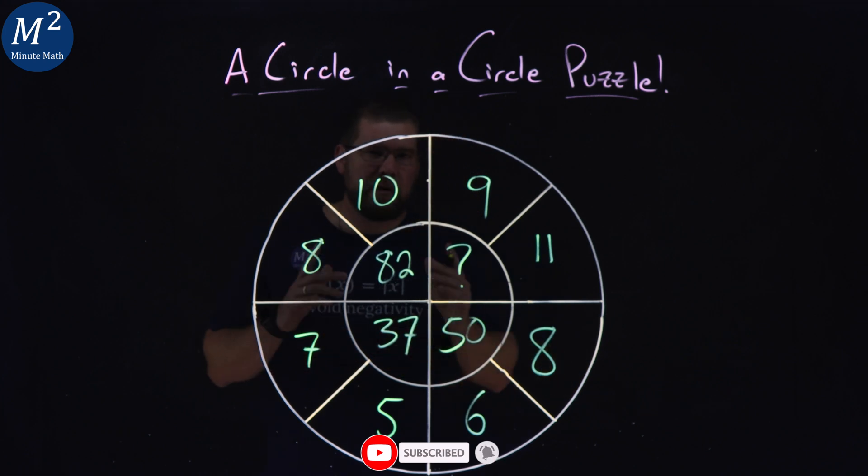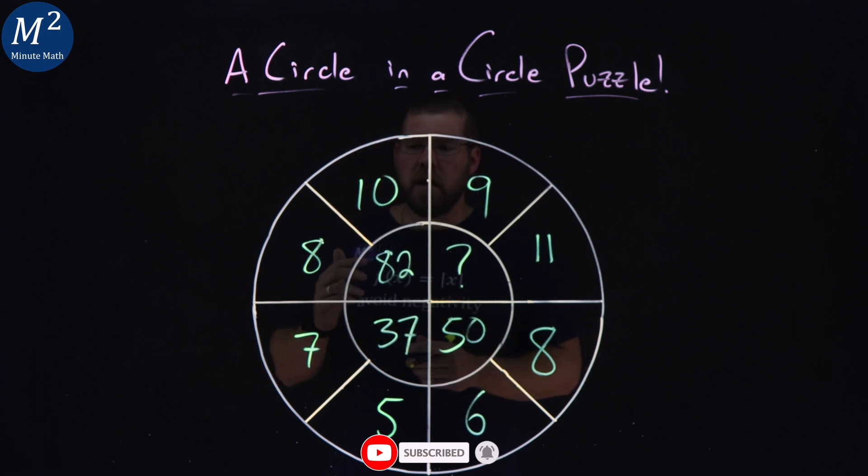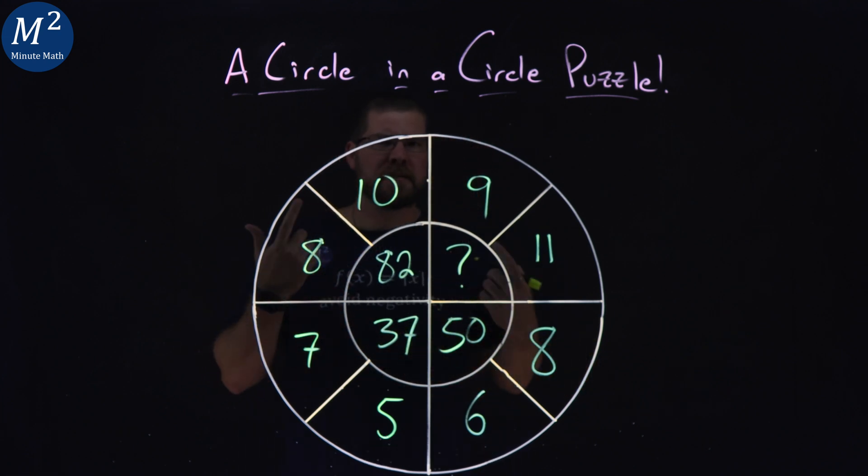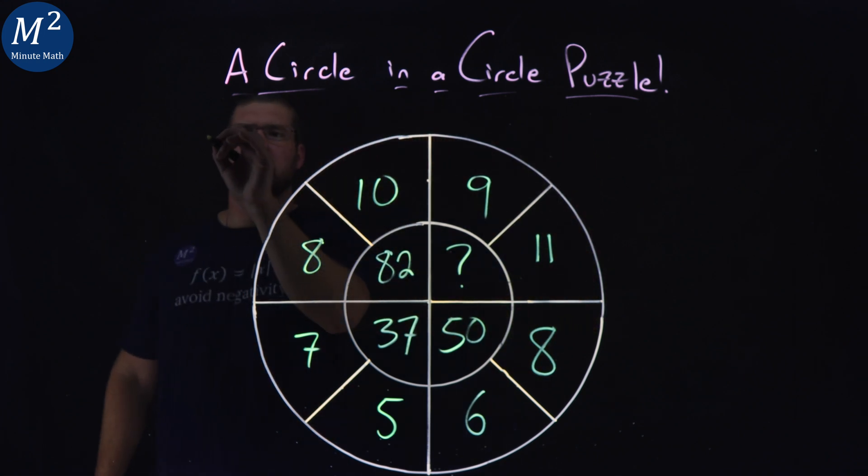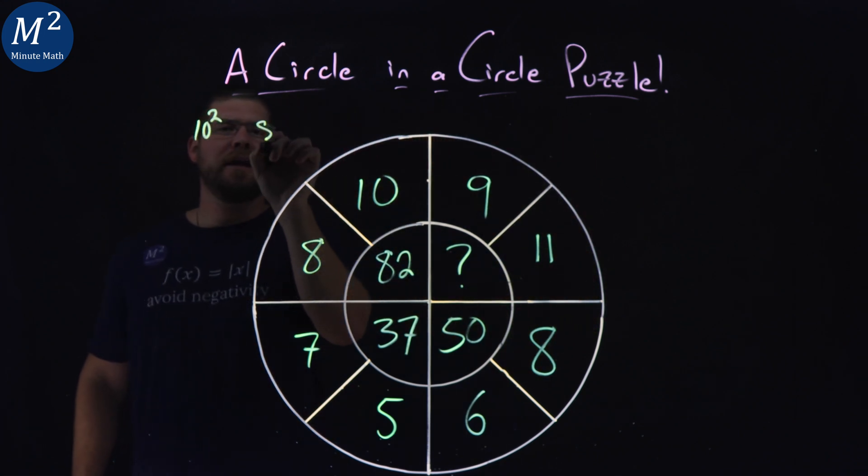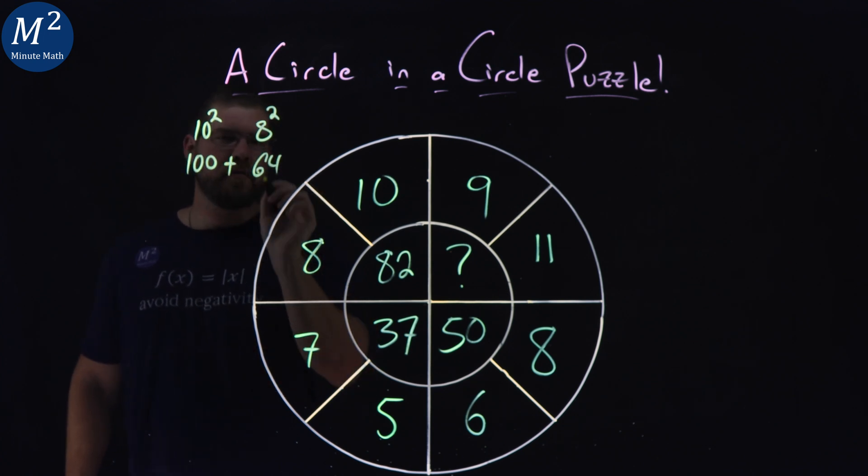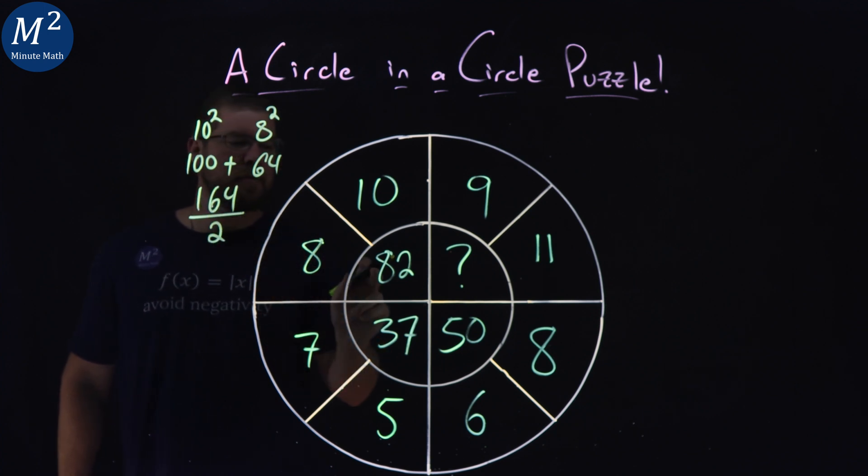This one, a little trickier. Let's have the 8 and 10 but let's square them. All right, let's do it over here. We have 10 squared and 8 squared. What do we got? 10 squared is 100 and 8 squared is 64. If we add those two numbers, here we go. 164, divide that by 2, we got an 82.